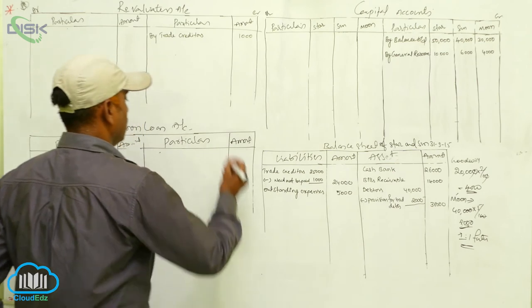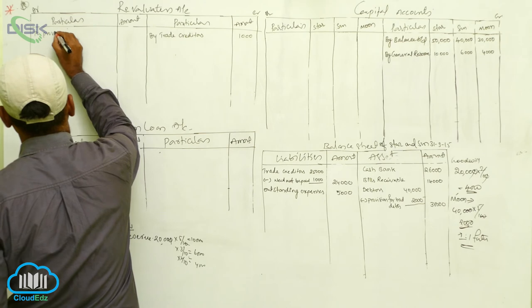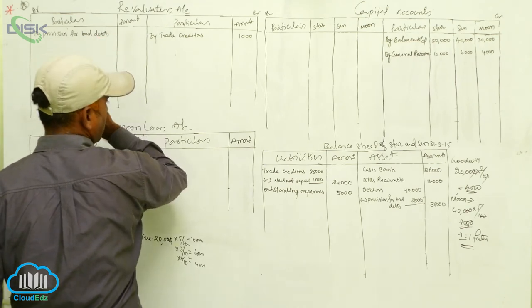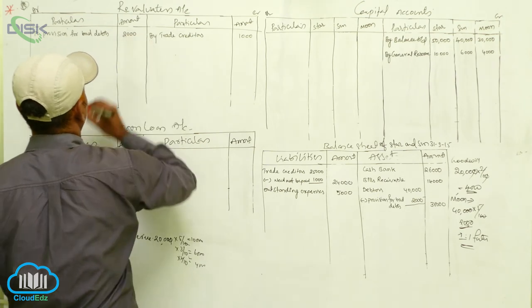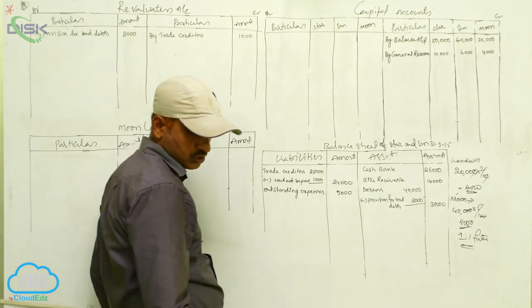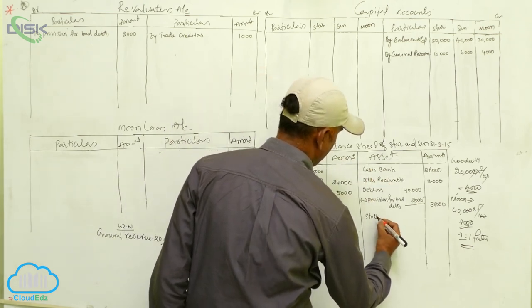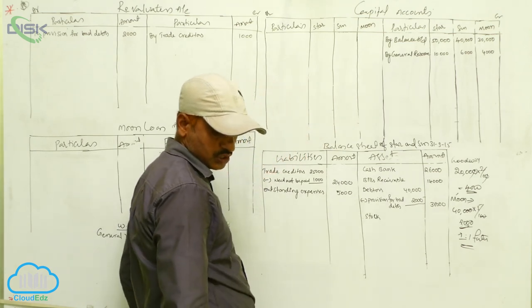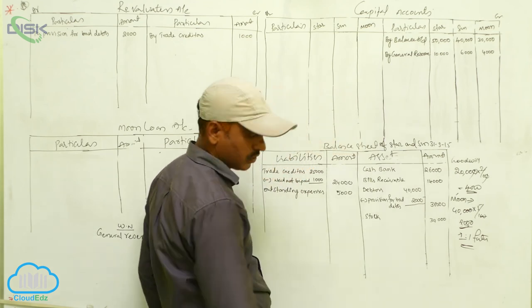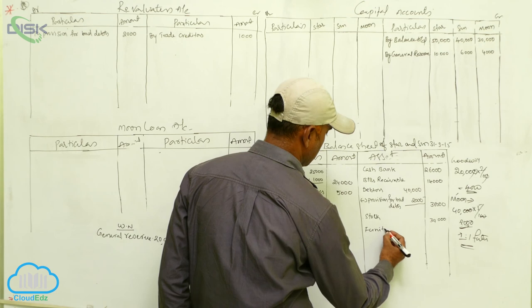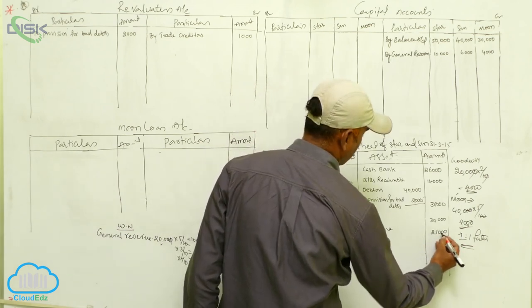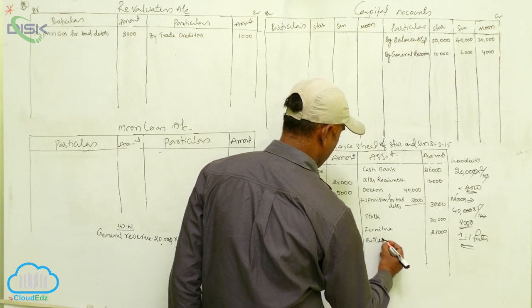On the debit side of the revaluation account, we write: provision for bad debts ₹2,000. Stock is ₹30,000 with no adjustment, so ₹30,000 is written directly. Furniture is ₹25,000 with no adjustment. Next is buildings, which has an adjustment — it is revalued upward to ₹42,000.